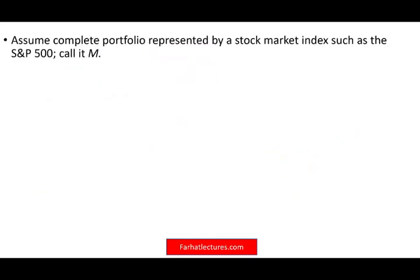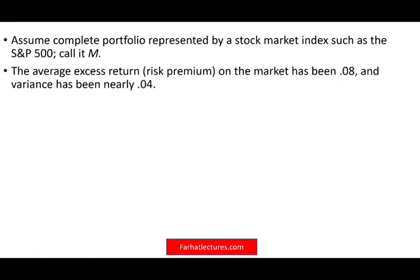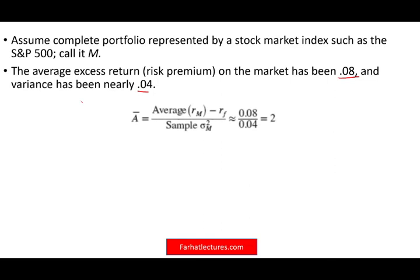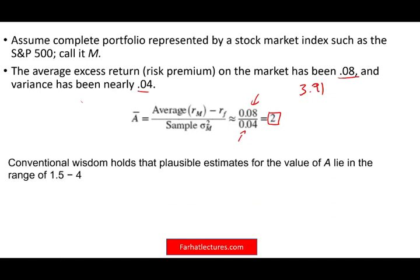Assume a complete portfolio represented by the stock market index, such as the S&P 500 — call it M. The average excess return, which is the risk premium on the market, is 0.08 — that's the numerator — and the variance is 0.04. If we take 0.08 divided by the variance, that gives us A equals 2. In the prior example we had 3.91, now we have 2. Conventional wisdom holds that a plausible estimate for the value of the price of risk A lies in the range of negative 5 to 4.